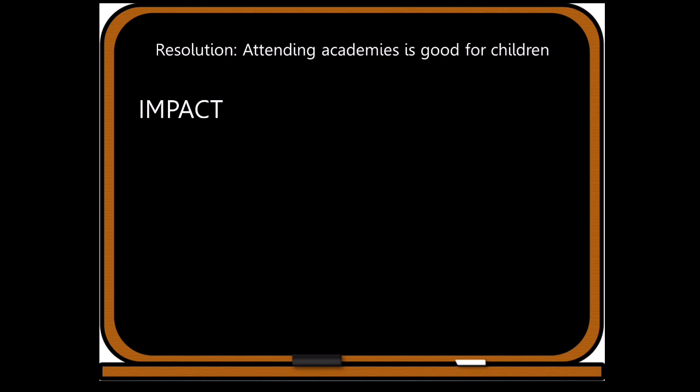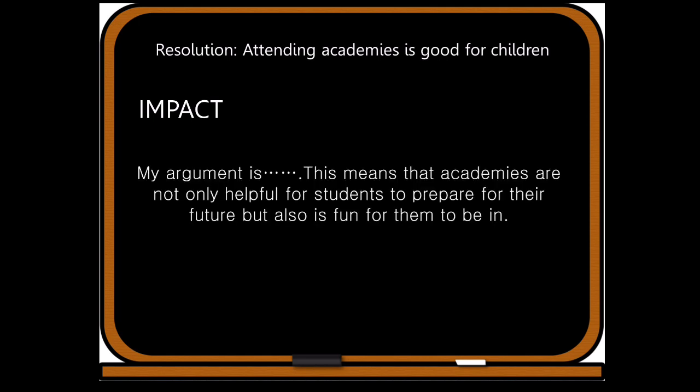Back at the drawing board with the same resolution — attending academies is good for children — we should add the impact at the end of the argument. So my argument is [the A-R-E content] ... this means that academies are not only helpful for students to prepare for their future, but also fun for them to be in. With this example, you're now putting a picture in the mind of the judge of how academies can help students prepare for their future — it's fun, it helps them learn, and it gives more meaning to the argument that you've presented.